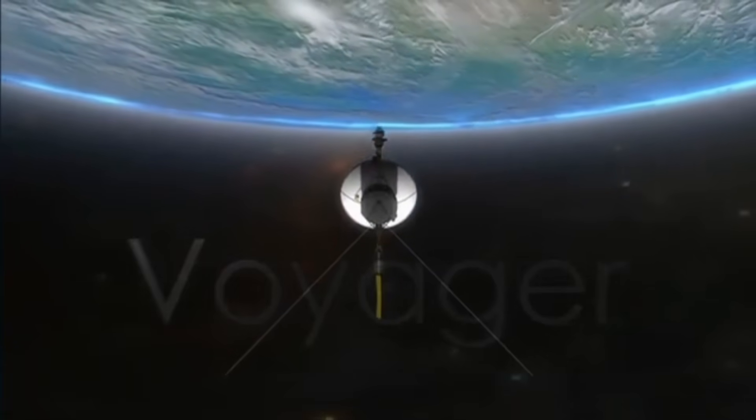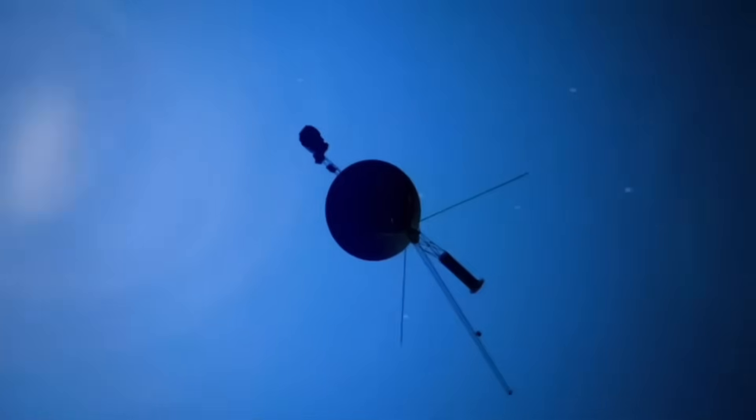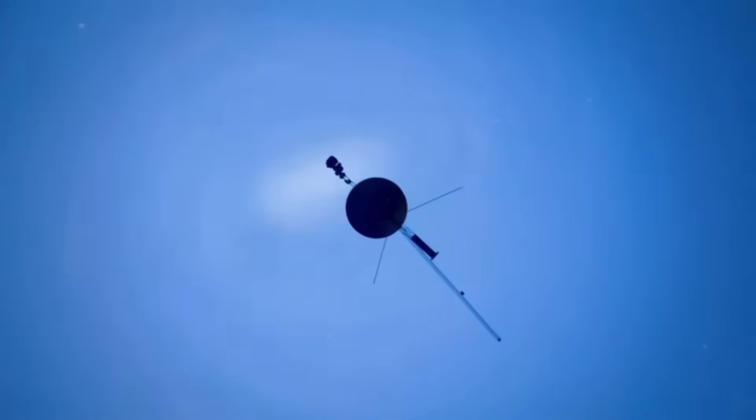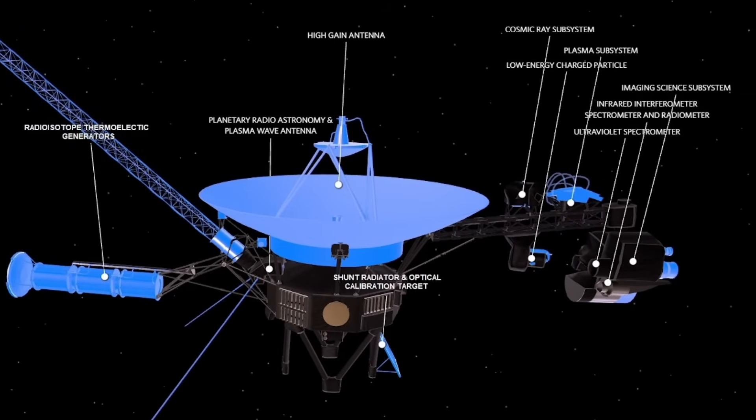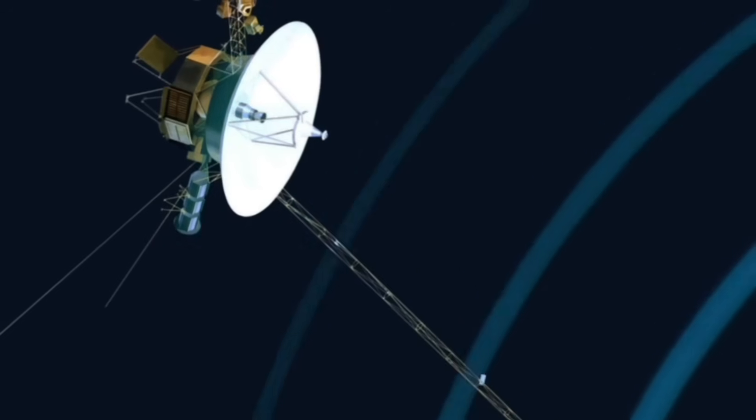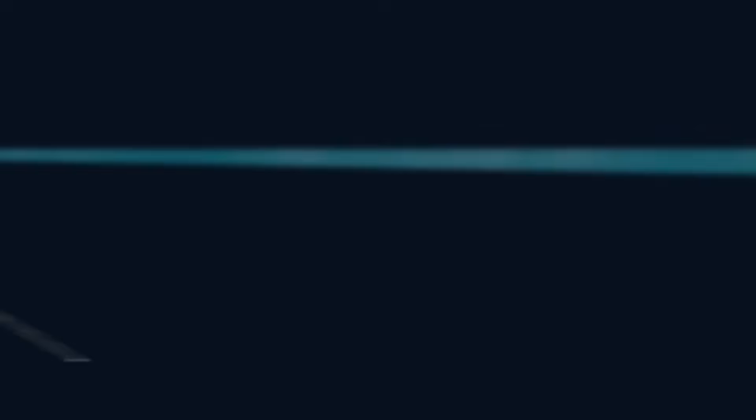Despite its age and dwindling power supply, several key instruments on Voyager 1 remain operational. Most critically, its plasma wave subsystem and magnetometer continue to collect data about the environment outside our solar system. These instruments, designed with 1970s technology, are somehow still sending back readings that are now causing astronomers to question their most fundamental assumptions.